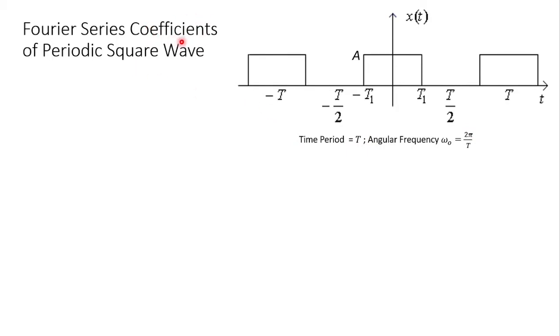In order to find the Fourier series coefficients, we look into the analysis expression: aₖ = (1/T) times the integration over the time period of the signal x(t) with respect to the orthogonal basis, that is e^(-jkω₀t) dt.